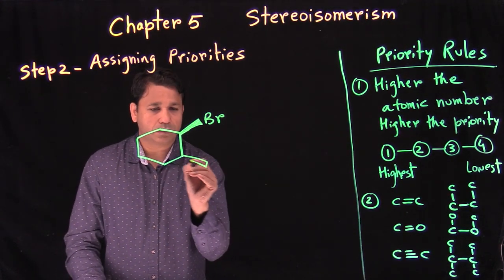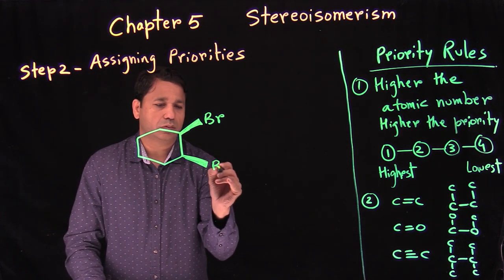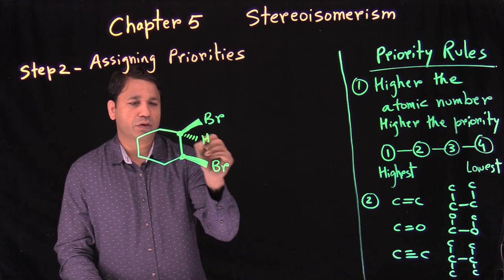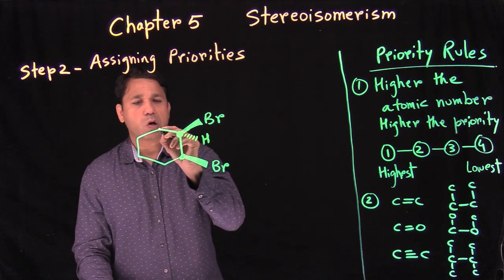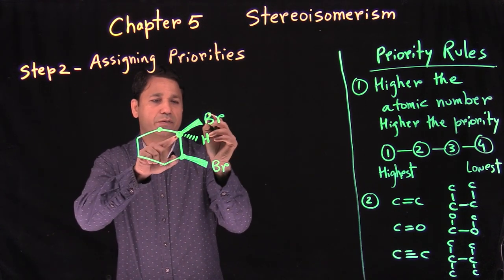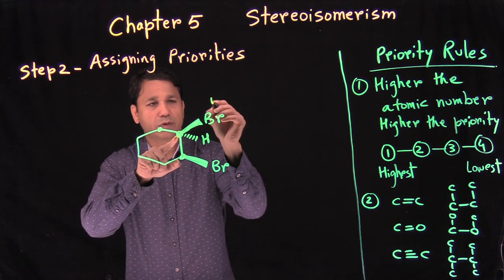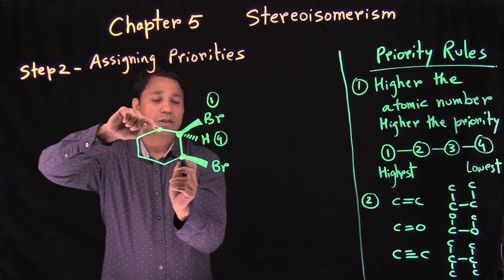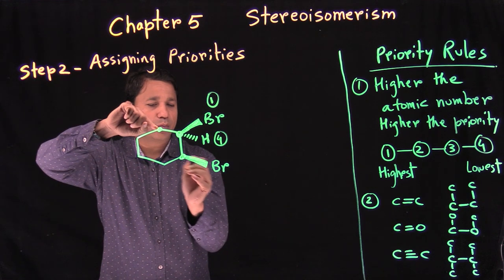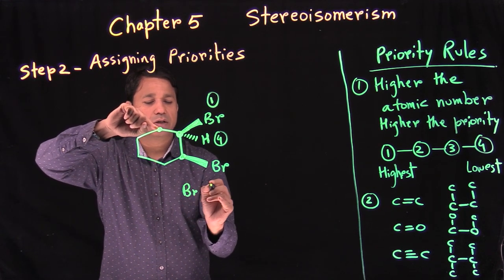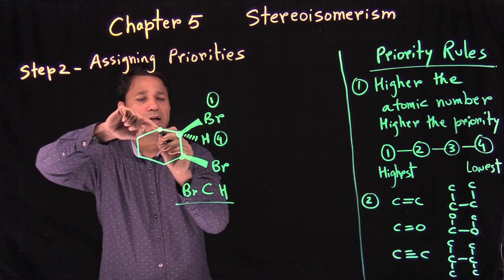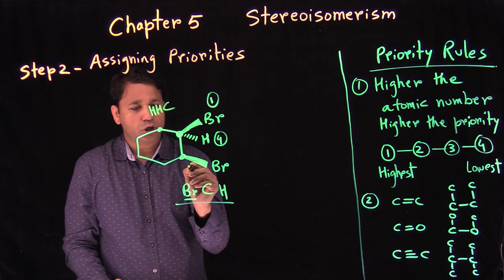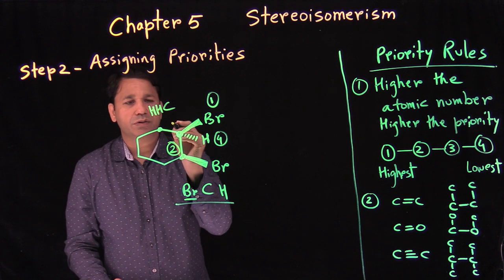Let's try this example. We have two stereogenic carbons — handle one at a time. For this first one: bromine, a hydrogen, a carbon, and a carbon. Bromine gets number one; hydrogen gets number four. Carbon and carbon are the same at first point of contact, so we go to the second. From one carbon: bromine, hydrogen, and a carbon — Br, C, H. From the other: hydrogen, hydrogen, and a carbon — H, H, C. Bromine gives the higher priority, so that group gets number two and the other gets number three.